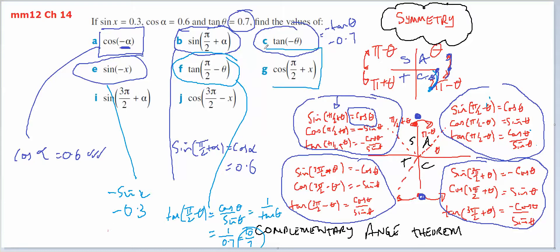Looking at g: cos of π/2 plus x. π/2 plus x is the second quadrant. So this is going to equal negative sine of x, and sine of x is 0.3, so it's going to be negative 0.3.